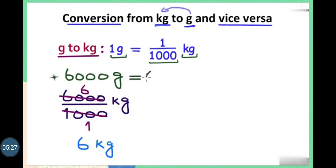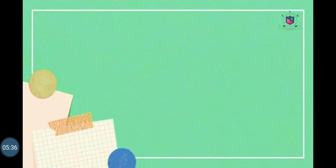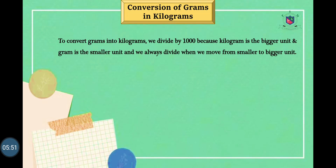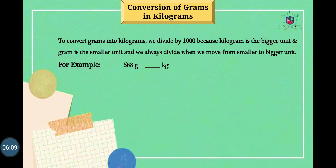I hope you learned it very well. Let's take a review of all the points studied in today's lesson. To convert grams into kilograms, we divide by 1000, because kilogram is the bigger unit and gram is the smaller unit. We always divide when we move from the smaller to the bigger unit.